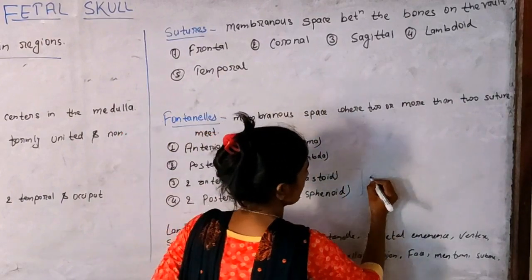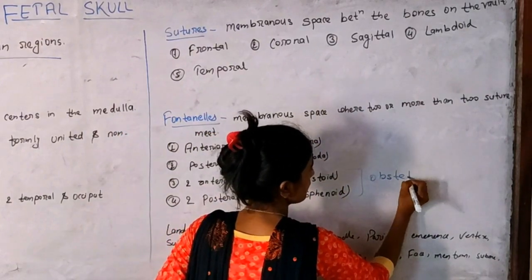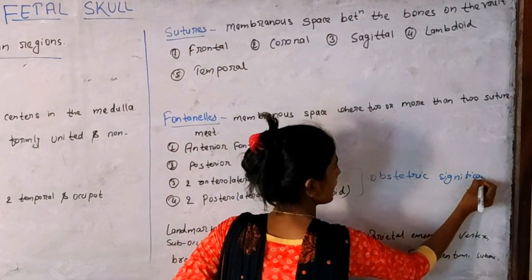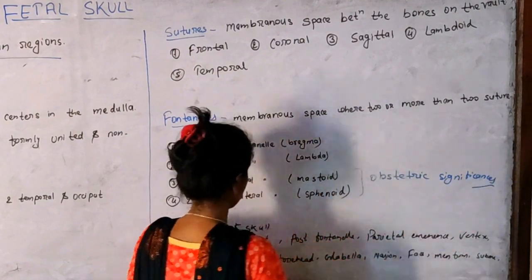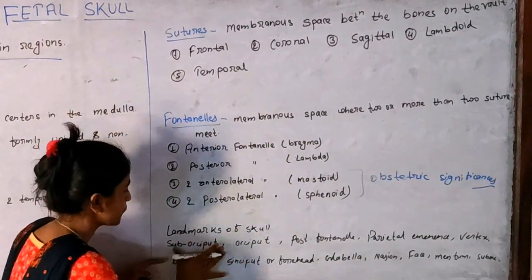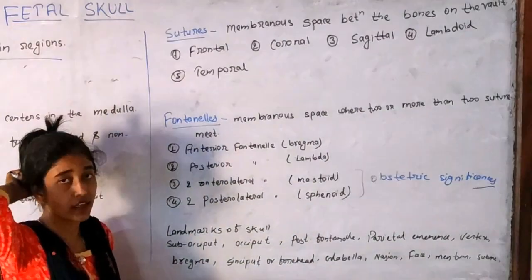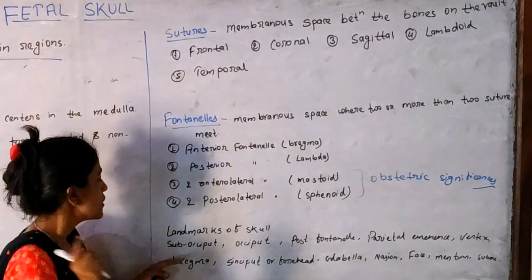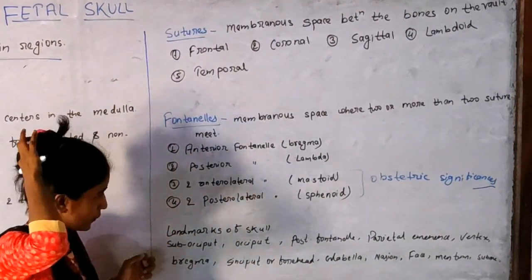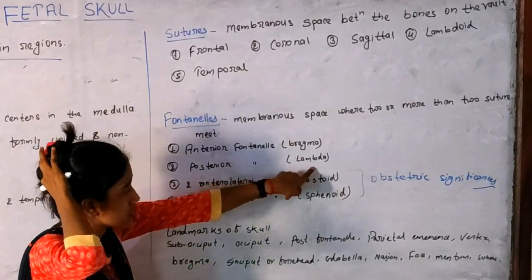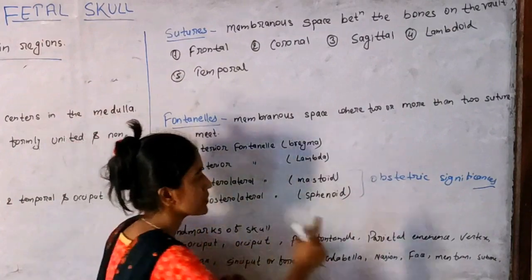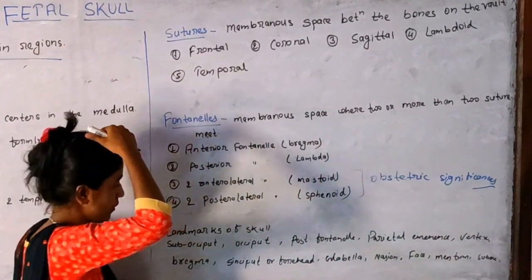The landmarks of the fetal skull include: sub-occiput, posterior fontanel, parietal eminence, and vertex.